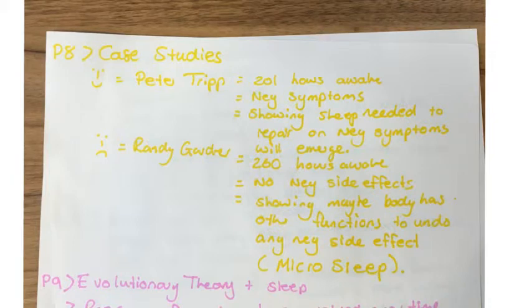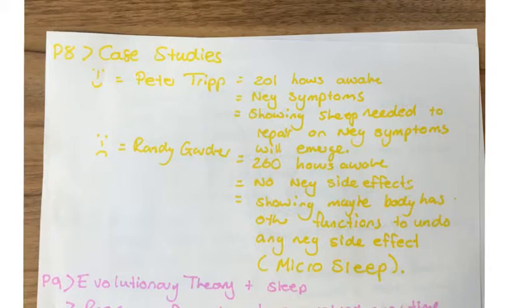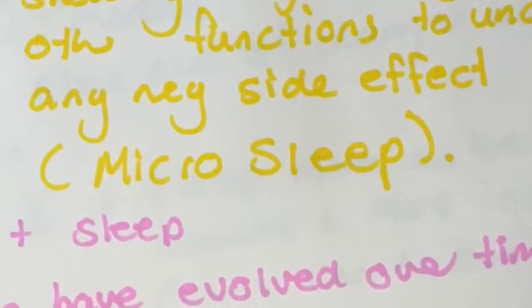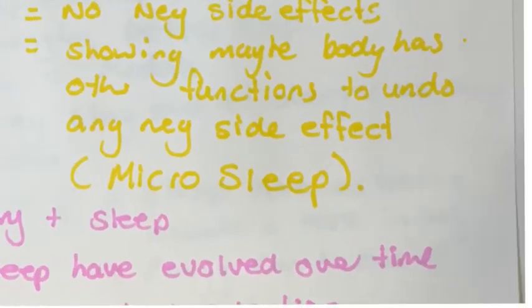The case studies for paragraph eight must be very concise and to the point. We use Peter Tripp and Randy Gardner. Peter Tripp is supporting evidence for restoration theory — he had 201 hours awake, and when awake for that long, he showed negative symptoms such as paranoia and hallucinations, showing that sleep is necessary to avoid negative side effects of sleep deprivation. Meanwhile, Randy Gardner is a criticism of this: awake for 260 hours, he showed no negative side effects. A counter-point here is the concept of micro-sleep.